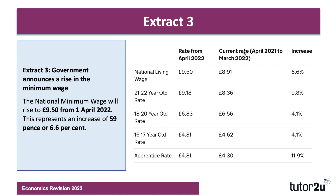The UK government announced back in autumn 2021 that from April the 1st the minimum wage will rise by 59p — a 6.6% increase — to £9.50. That is quite a sizable jump. The other rates are going up as well, including the apprenticeship rate increasing to £4.81, bringing it into line with the rate for 16 to 17 year olds.